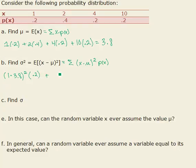2 minus 3.8 squared times .4 plus 4 minus 3.8 squared times .2 and finally add to that 10 minus 3.8 squared times .2. Totaling this up we get a variance to be about 10.56.